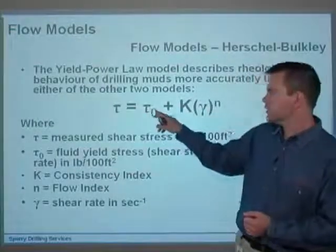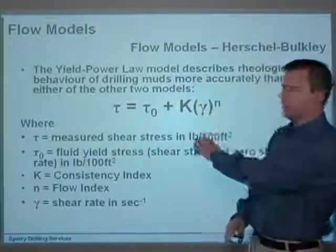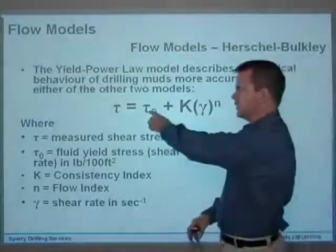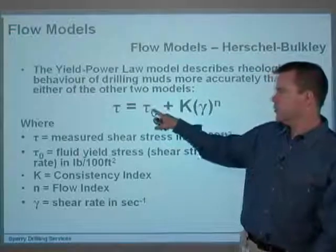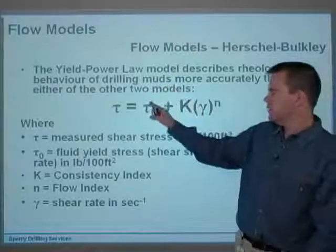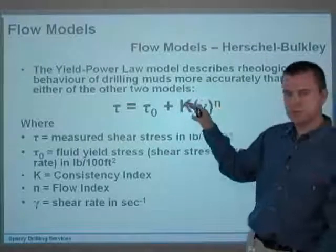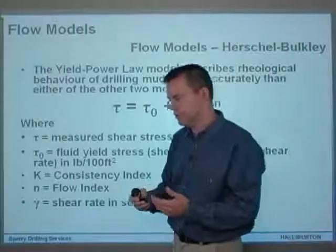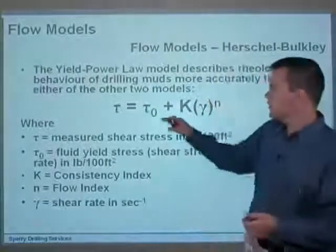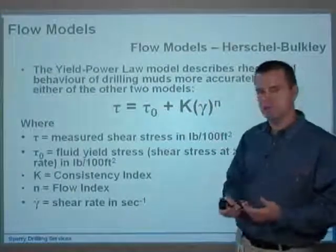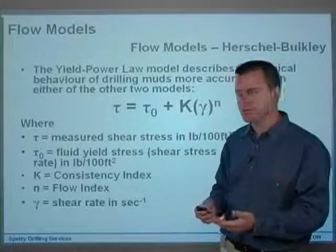We've got tau equals tau-zero plus K times gamma to the power of n. If you look at the part K times gamma to the power of n, that is pretty much the power law. Adding tau-zero — if you remember, the Bingham plastic model had yield point plus PV times gamma — so we've got a yield point, and we've also got the benefits of the power law in that it's describing a curve. It's describing a fluid that has non-Newtonian behavior, and also a fluid which has a yield point, which needs a certain shear stress applied before a shear rate results.